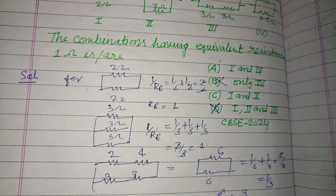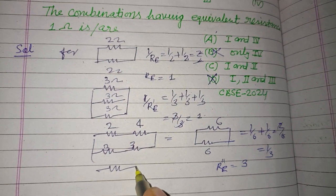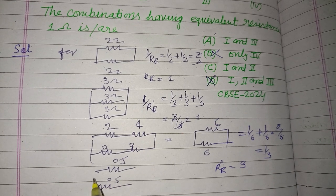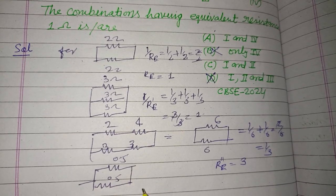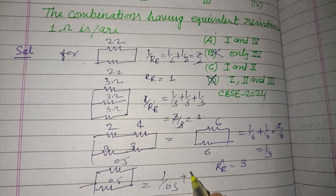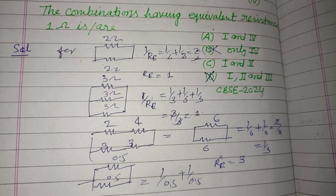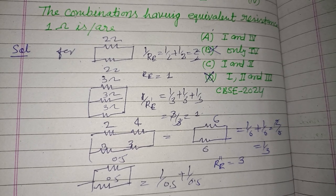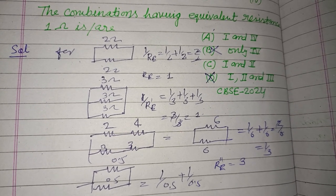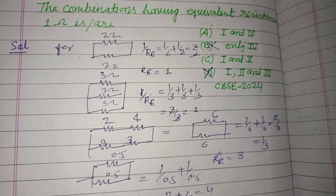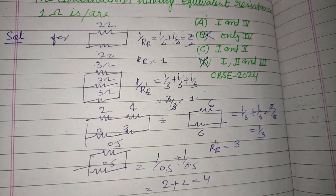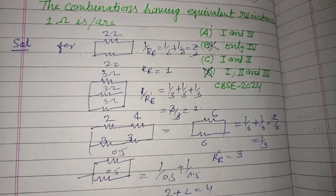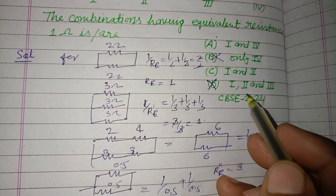And now we check fourth - it is 0.5, 0.5, and 0.5. So 1/R_E, because these are in parallel combination. 1/0.5 is 2, plus 2, plus 2, this is 4. And equivalent resistance R double dash equals 1/4, so this is also not included.